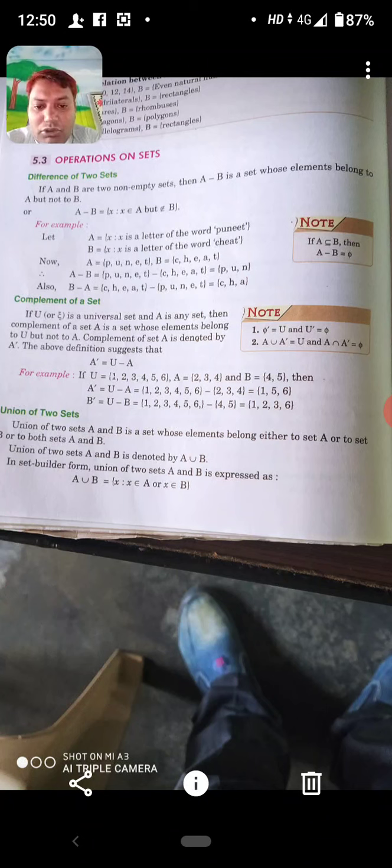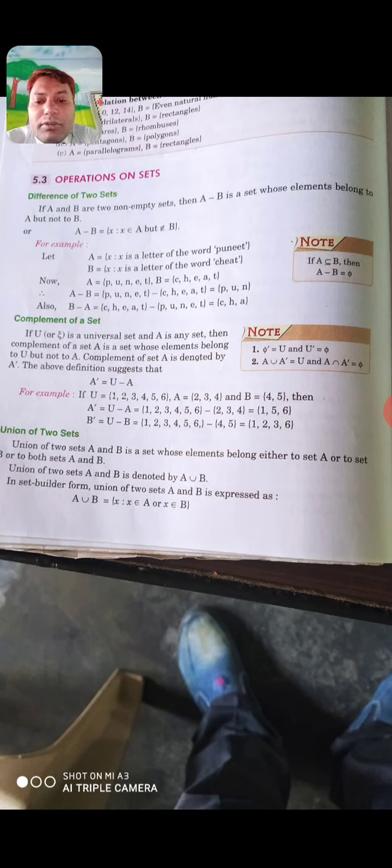Union of two sets kya hota hai? Next topic hai. Union of two sets A and B is a set whose element belong either to set A or to set B or to both set A and B. Union of two sets A and B is denoted by A union B in set builder form. A union B is equal to X such that X belongs to A or X belongs to B.